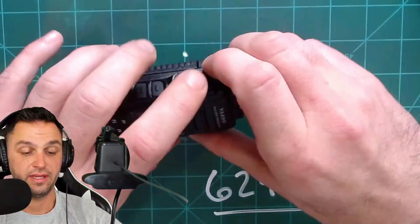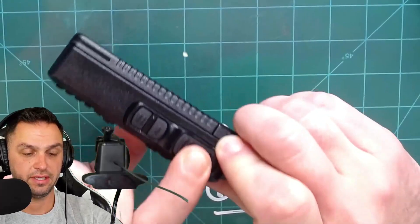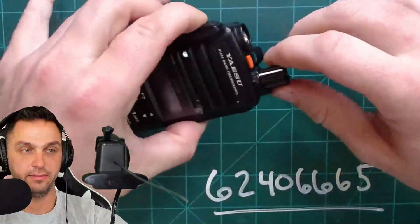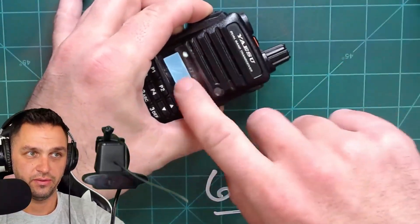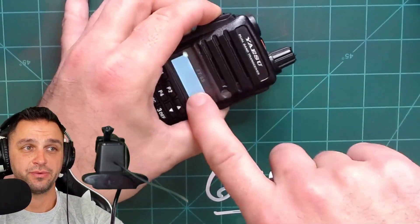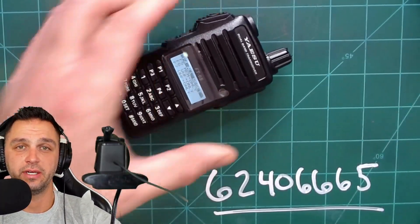So what you're going to do is you're going to hold down the push to talk button, the top button here, and the middle button, which is the monitor button, and then you're going to turn on the radio, the FT65. You're going to see that the screen is blank, and it will be blank until you let go. Once you let go,